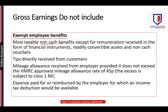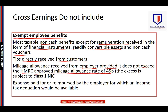Items that will not form part of gross earnings include: most taxable non-cash benefits (except remuneration in the form of financial instruments, readily convertible assets, and non-cash vouchers); tips received directly from customers; mileage allowances from the employer provided they do not exceed the HMRC approved rate of 45p per mile (any excess is subject to Class 1 NIC); and expenses paid or reimbursed by the employer for which an income tax deduction would be available.